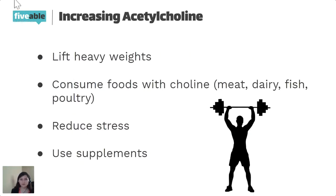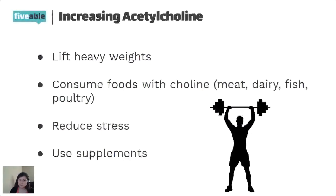To increase ACH, you should lift heavy weights, consume foods with choline such as meat, dairy, fish, and poultry, and reduce stress overall. You can do yoga and meditation, which will also help with other neurotransmitters. You can also use supplements — though as always, consult your doctor before trying to increase or decrease anything.